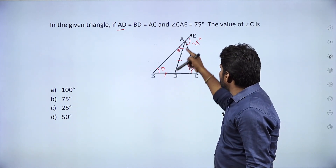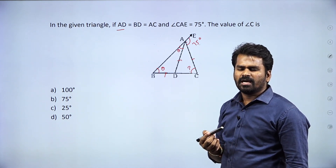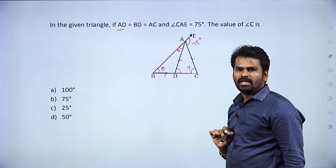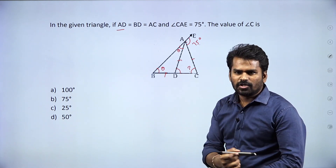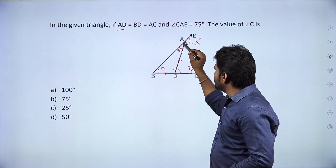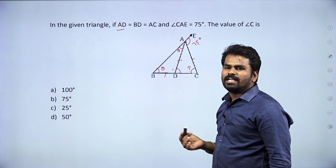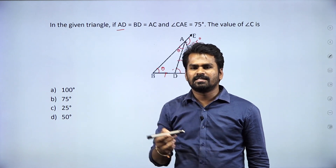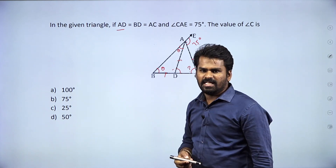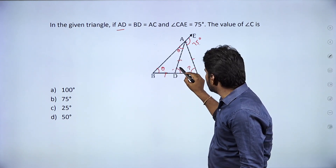In triangle ABD, this is an isosceles triangle. So angle D and angle C are the same — let's call them theta. Now, looking at the exterior angle property: the exterior angle equals the sum of the two opposite interior angles. So the exterior angle equals theta plus theta, which is 2 theta.